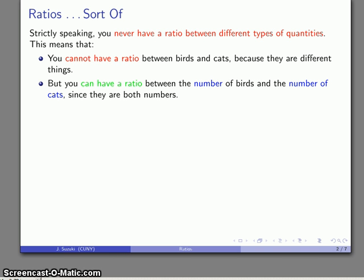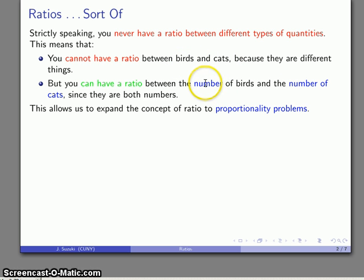However, because we can assign numbers to many things, we can have a ratio between the number of birds and the number of cats because both of them are numbers. This allows us to expand the concept of ratio to consider proportionality problems. They're really ratio problems. The only change is while we speak about the ratio between two different things, we're really referring to the ratio between the numbers of those two different things.